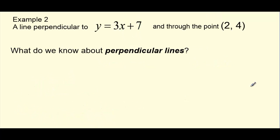Let's move on to an example that uses perpendicular lines. We need to come up with an equation of a line that is perpendicular to another line, y equals 3x plus 7. And our line has to go through the point 2, 4.